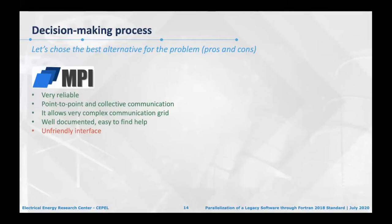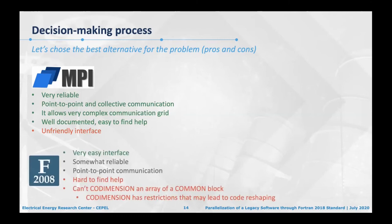MPI is very reliable — it has point-to-point and collective communication, allows very complex communication grids, and is well-documented and easy to find help for. But it has a really unfriendly interface: if you want to pass a user-defined type, you mostly have to rewrite the type in MPI format. Fortran 2008 coarrays have a friendlier interface but are only somewhat reliable, support only point-to-point communication, are hard to find help for, and you can't co-dimension an array of a COMMON block — a restriction that may lead to code reshaping.